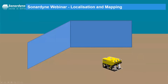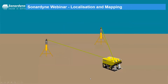Rather than bumping into walls, we replace the walls with subsea transponders. We localize ourselves using range information from those transponders, and simultaneously map the positions of the transponders on the seabed. We don't map the environment as such — we just map the transponder positions to give us precise navigation. That's the basic principle behind SLAM.